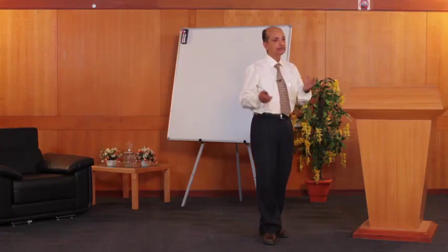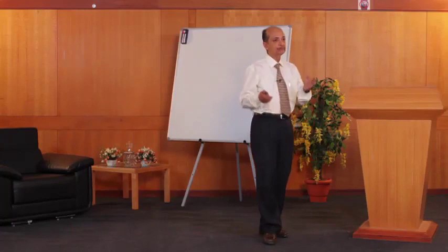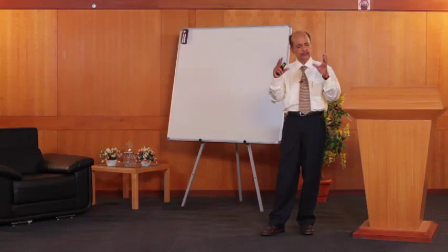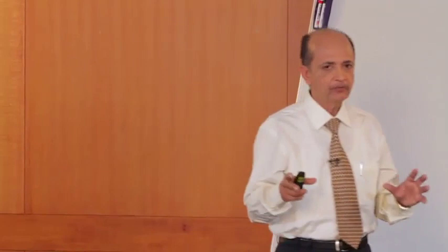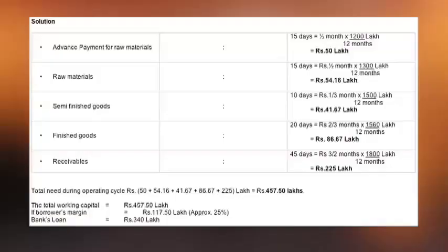Now the last stage is the receivable stage. The material has been prepared and manufactured. Now it is going to be sold. At the receivable stage, our assumption is that the unit is required to give forty-five days credit. During those forty-five days, the money is blocked. What is the working capital requirement at the receivable stage?